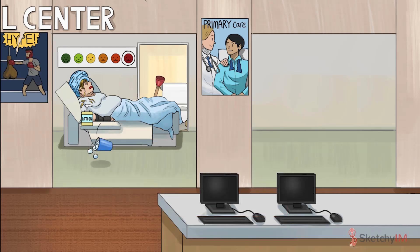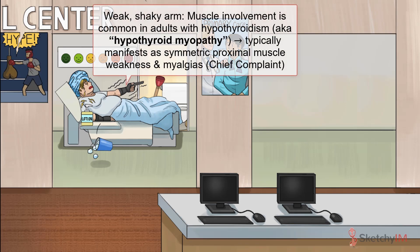It's not just the nerves that can be messed up. Muscle involvement, also known as hypothyroid myopathy, is also common in adults with hypothyroidism. Hypothyroid myopathy typically manifests as progressive symmetric proximal muscle pain and weakness, represented by this patient's weak arm laboring to use her TV remote. The struggle is real.